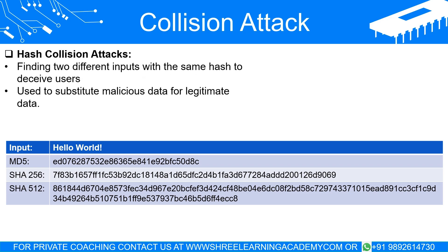Hash collision attacks. In a hash collision attack, an attacker tries to find two different inputs that produce the same hash output, with the goal of deceiving the system or the user. If the attacker can convincingly substitute a malicious file for a legitimate one, based on matching hash values, they could trick victims into accepting alternate data sets, leading to potential breaches in security or data integrity. An example would be a situation where an attacker identifies a hash collision between a safe file and a harmful one. If they replace the safe file with the harmful one on a server, anyone checking the integrity of the downloaded file by comparing hashes would be fooled into thinking the harmful file was the original safe file.